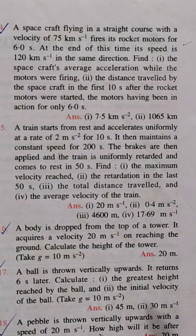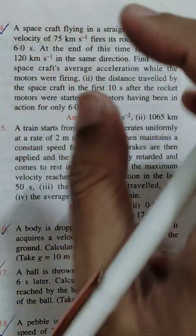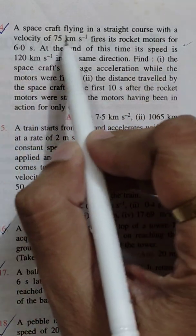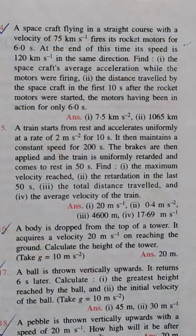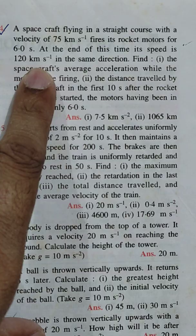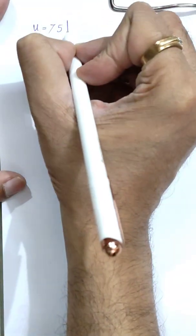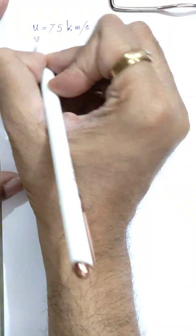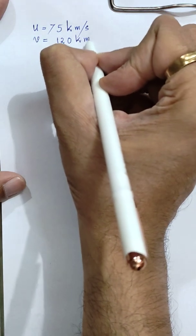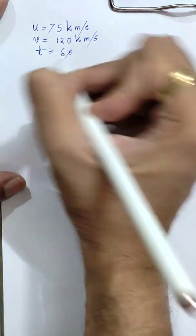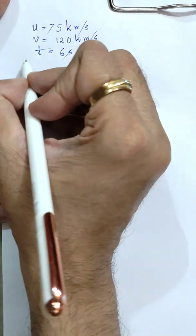This is a simple question on motion in one dimension. When the rocket motors are fired, the spacecraft accelerates. So for 6 seconds, the spacecraft accelerated from 75 km/s to 120 km/s. The initial velocity is 75 km/s, final velocity is 120 km/s, and this change occurred in 6 seconds. This is a rectilinear motion.